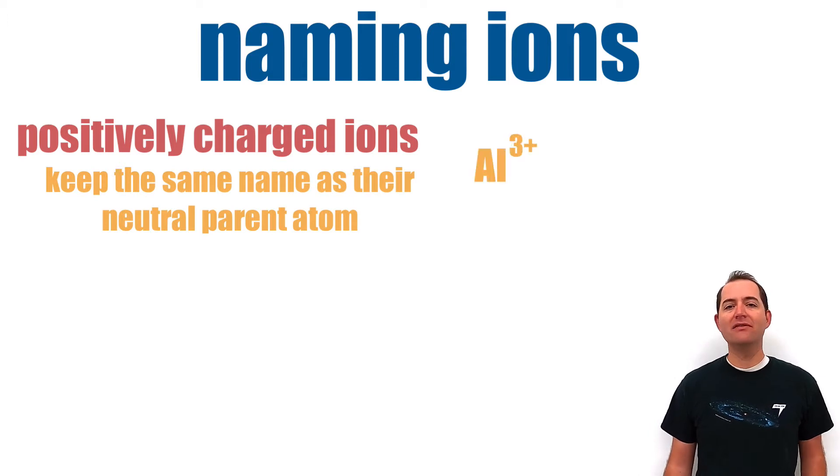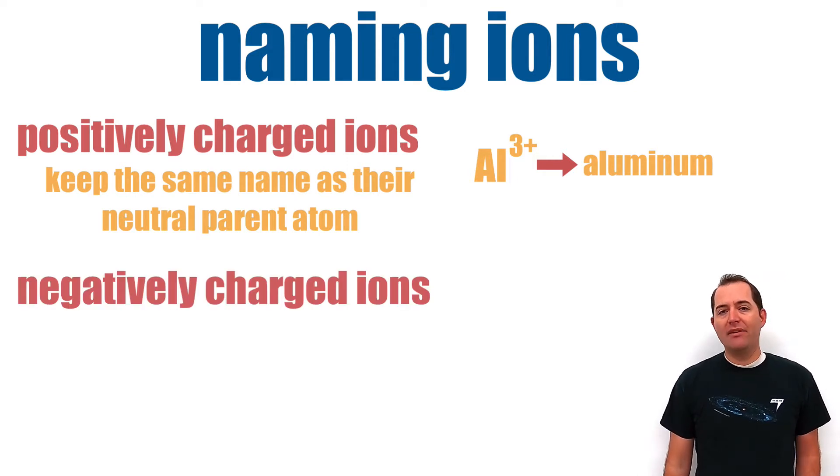Positively charged ions keep the same name as their neutral parent atom. For example, a positively charged ion of aluminum retains the name aluminum.